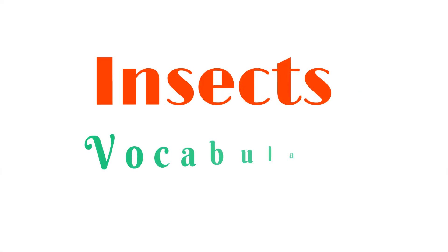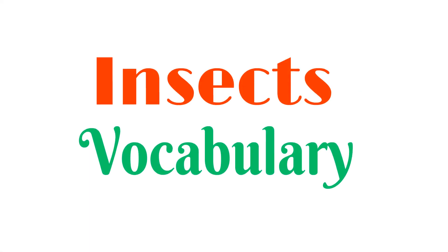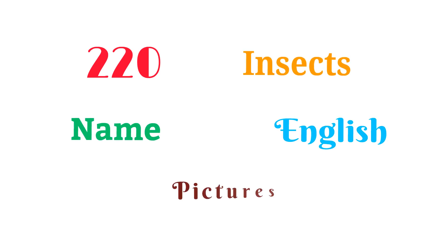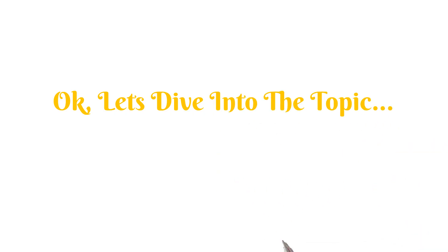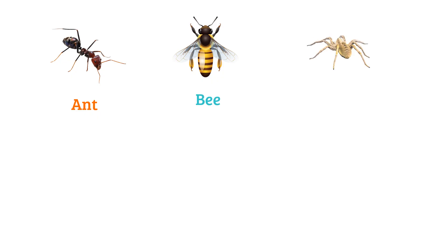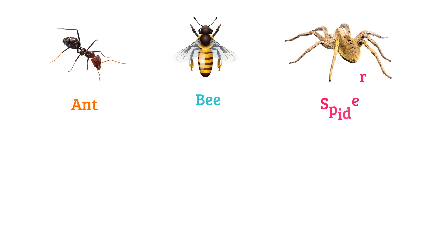Insects vocabulary: about 220 insects' names in English with pictures. Let's dive into the topic: ant, bee, spider.